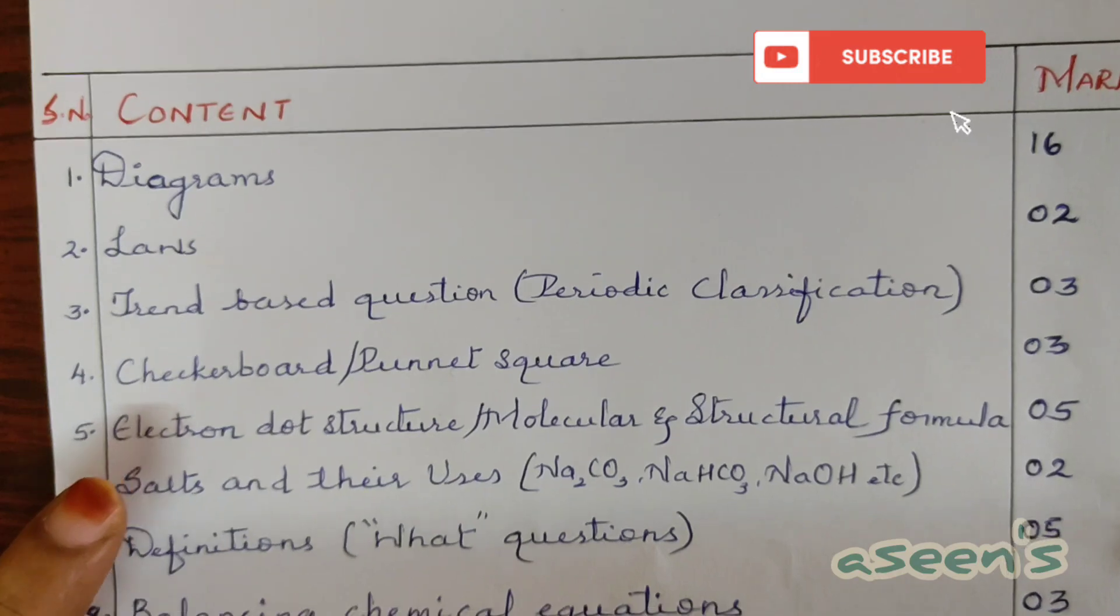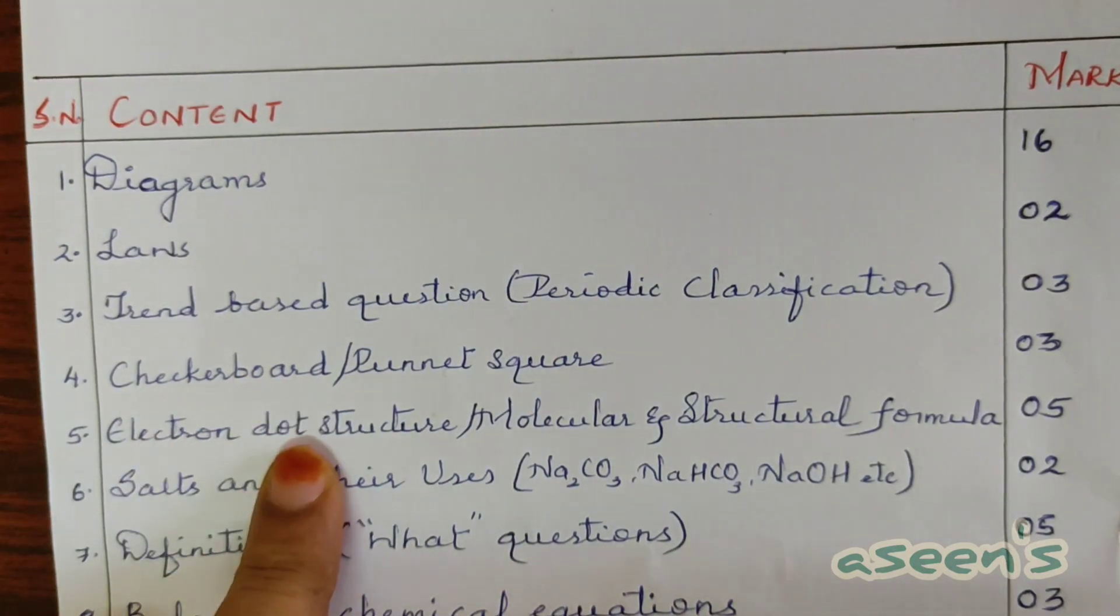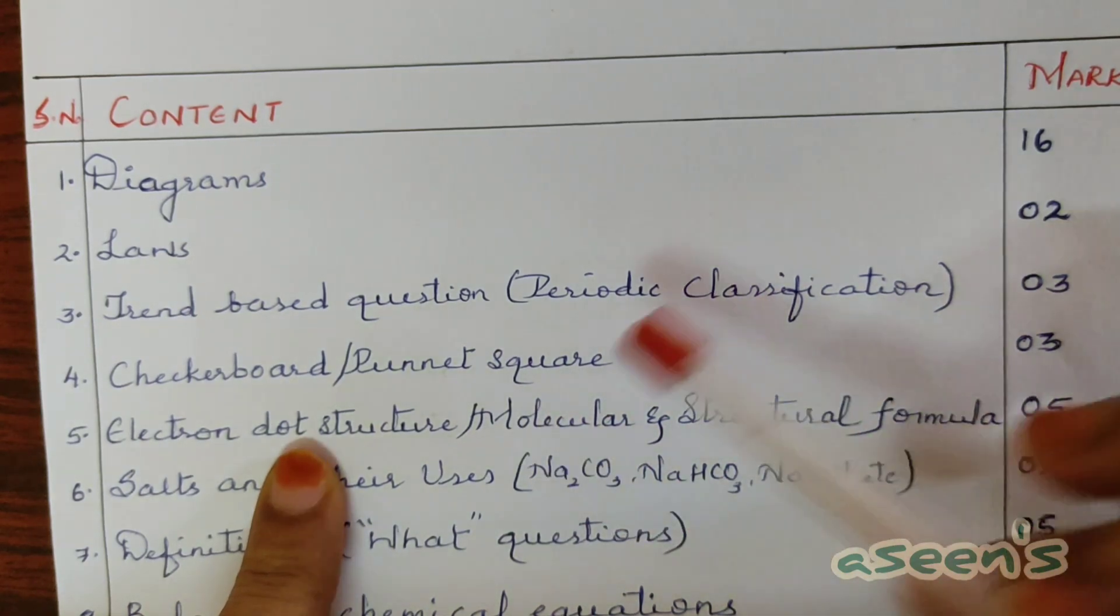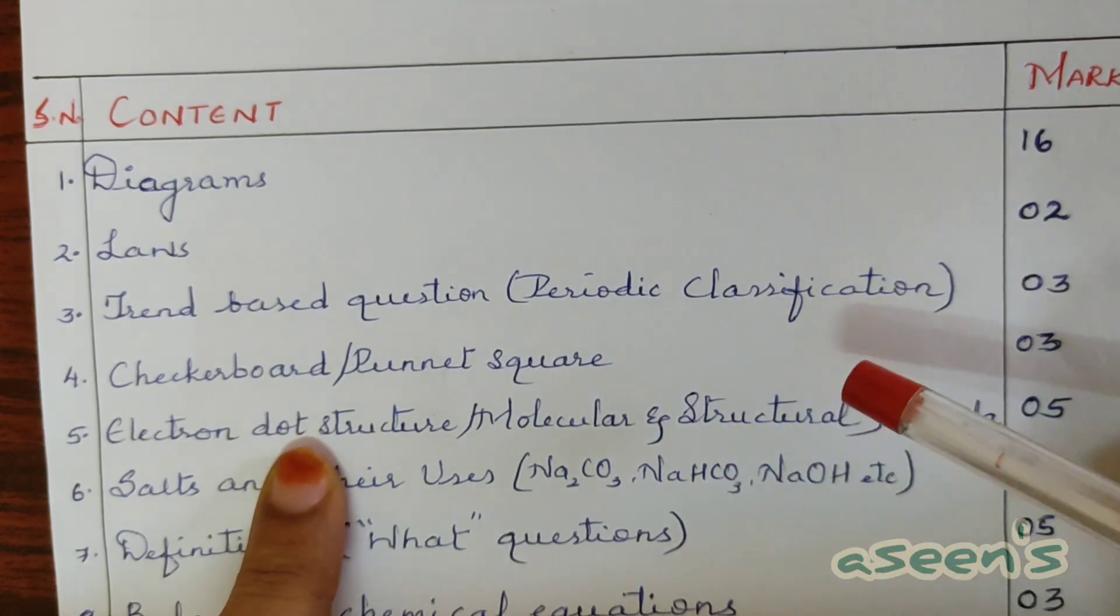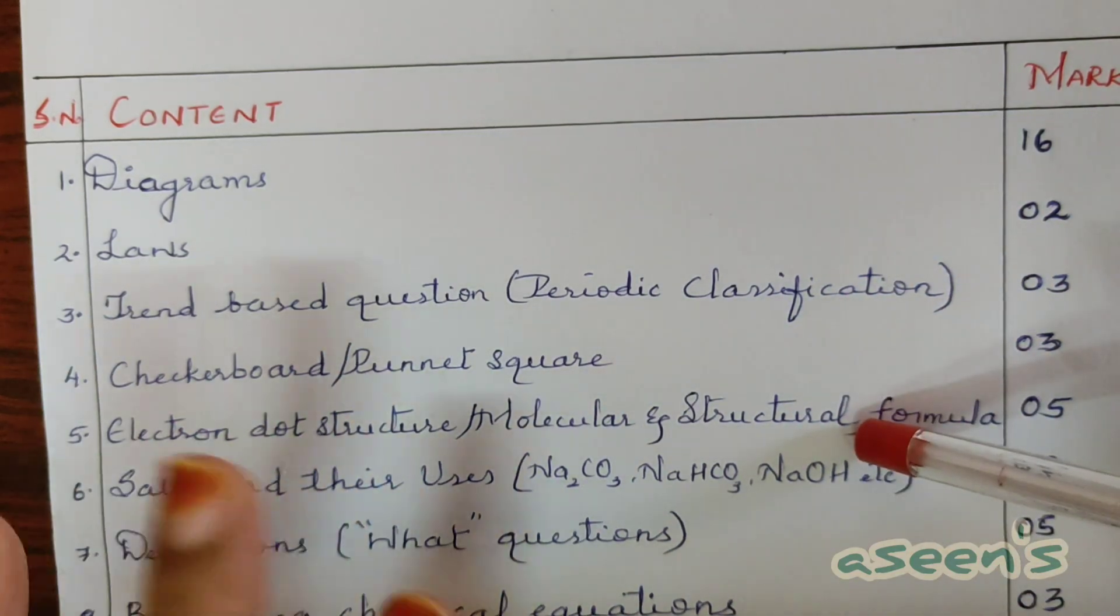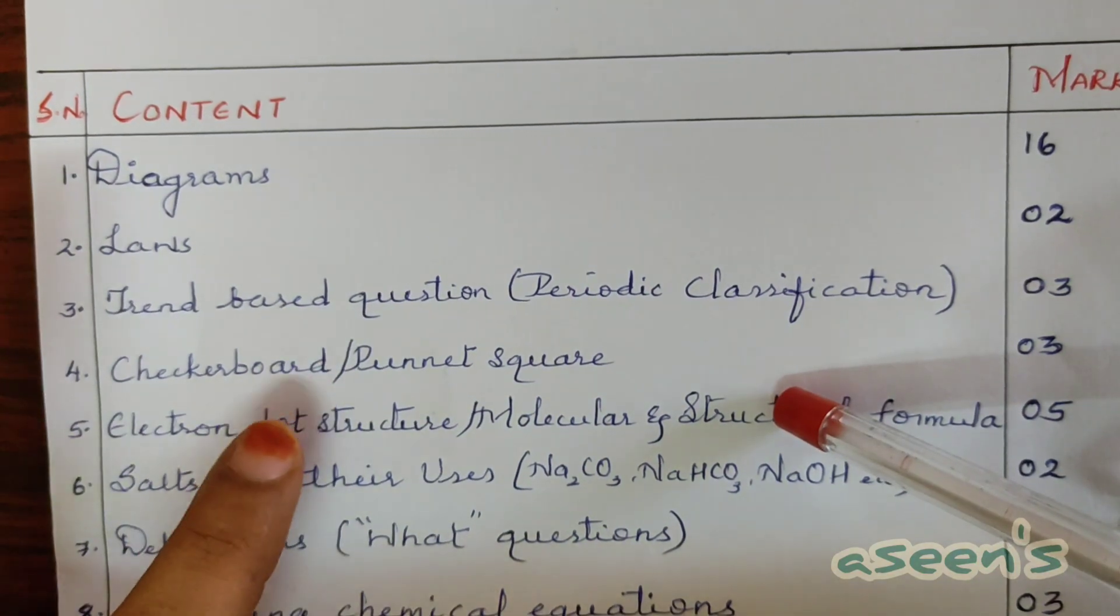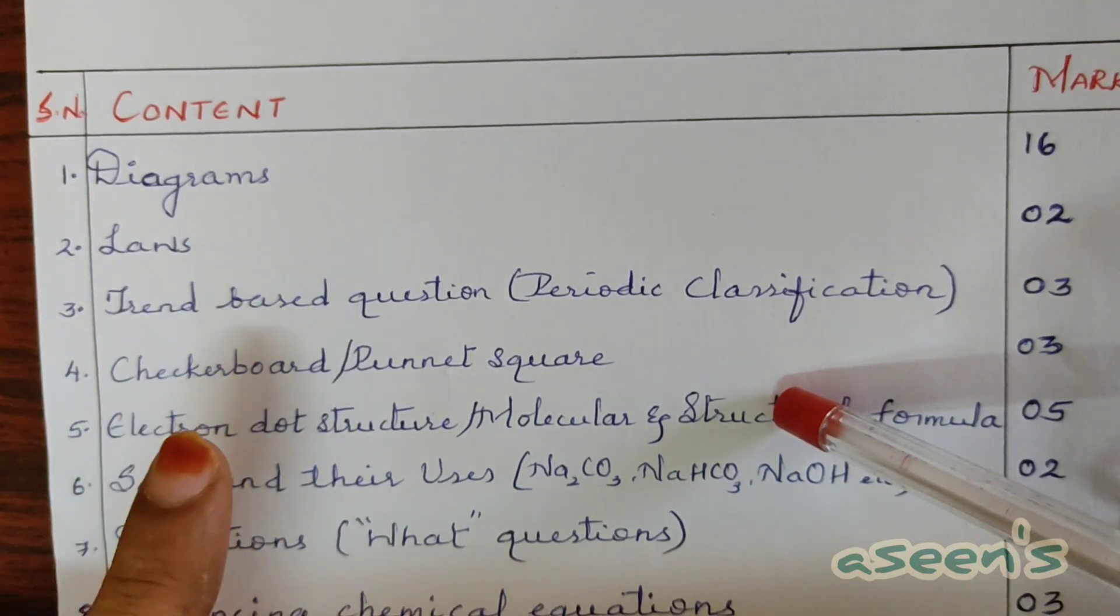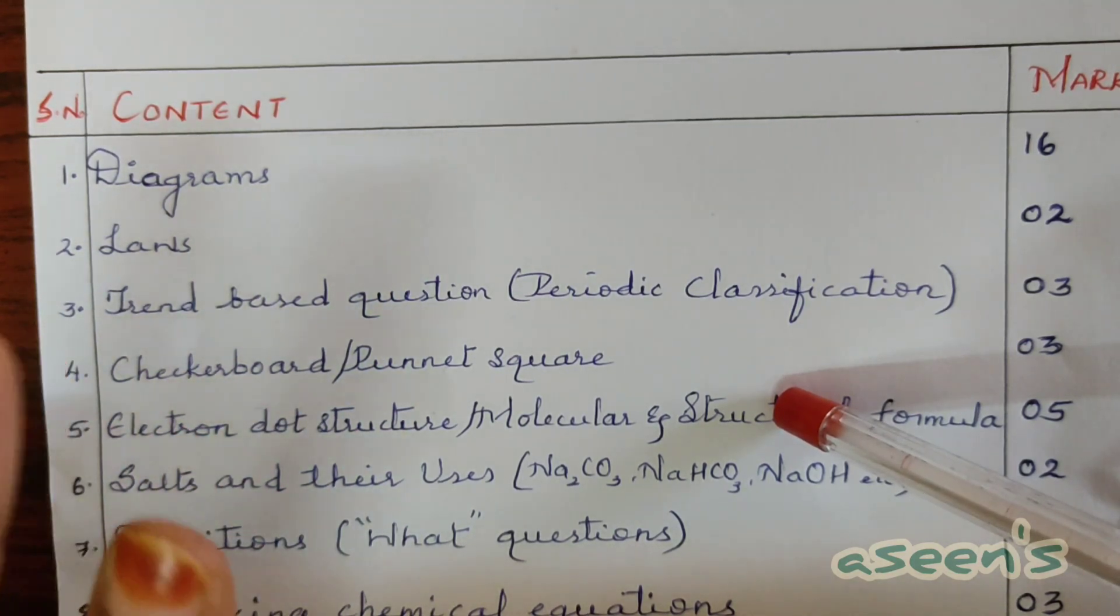Next, this is specifically for the chemistry part - electron dot structure, molecular and structural formula. Molecular and structural formula is from carbon and its compounds for alkanes, alkenes, alkynes, and also for the functional group families such as alcohol, carboxylic acid, etc. The electron dot structure goes for the same ones as well as for ionic compounds.